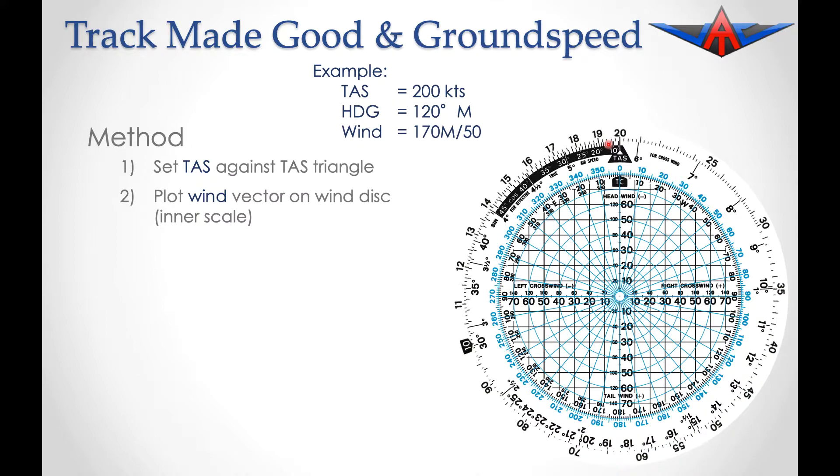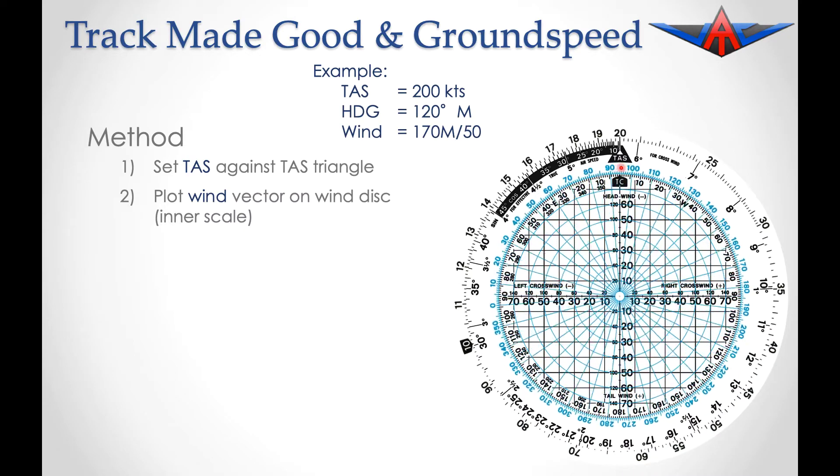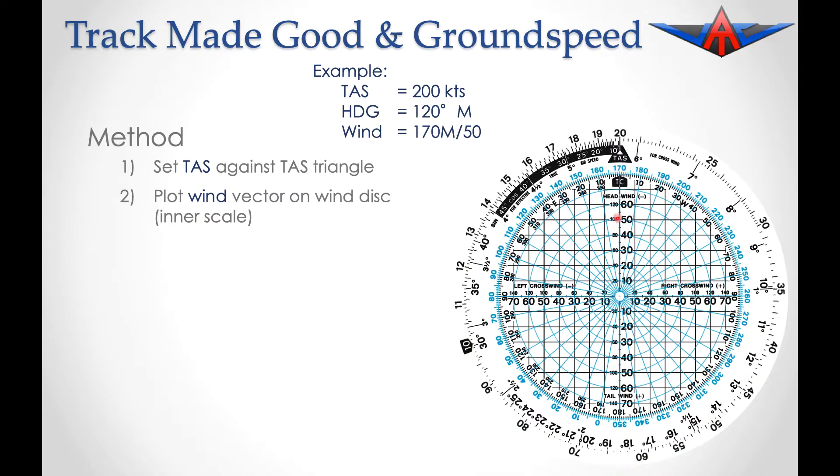The second step is to plot our wind vector on the wind disk, which is this colored disk. To make it easy, bring the wind direction of 170 degrees magnetic up above the TC mark. Once it's there, you can mark the 50 knot position using that scale. We'll plot the 50 knots with a clear X marking the position on that 170 degree line.